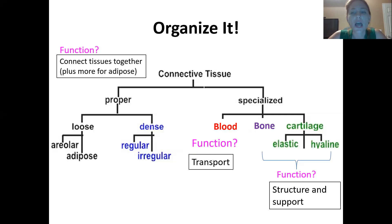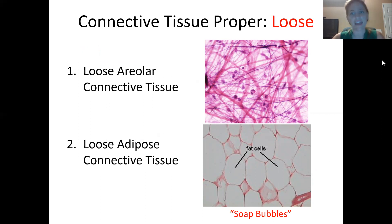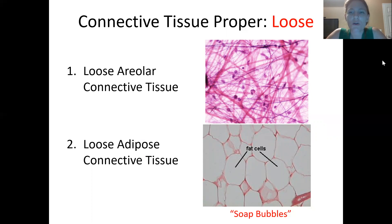For connective tissue proper, we further divide it into loose and dense. Looking at images of loose connective tissue, you can see there's a lot of space — things are not densely packed. The two types of loose connective tissue to know are loose areolar connective tissue and loose adipose connective tissue.